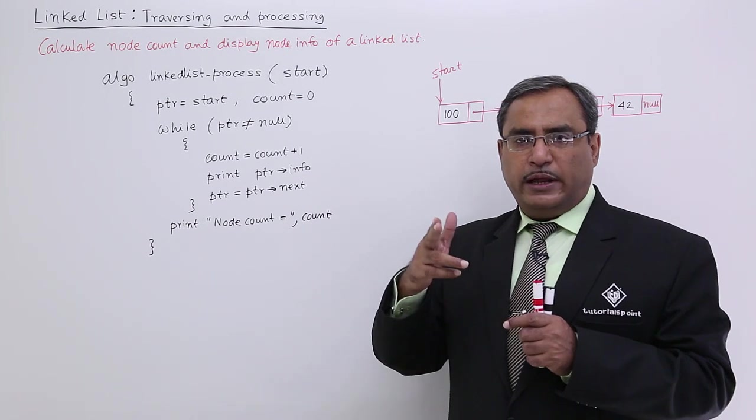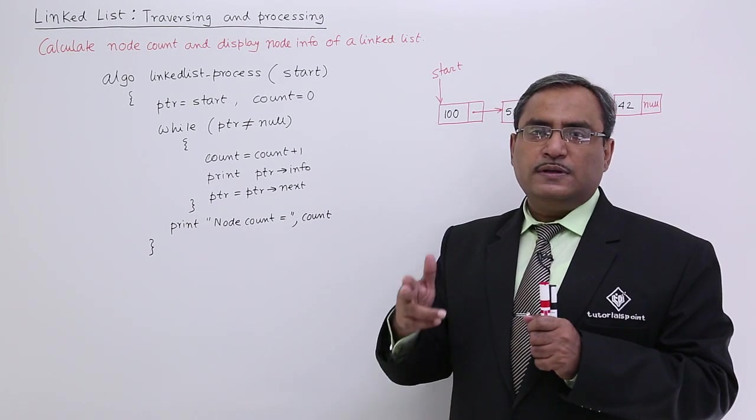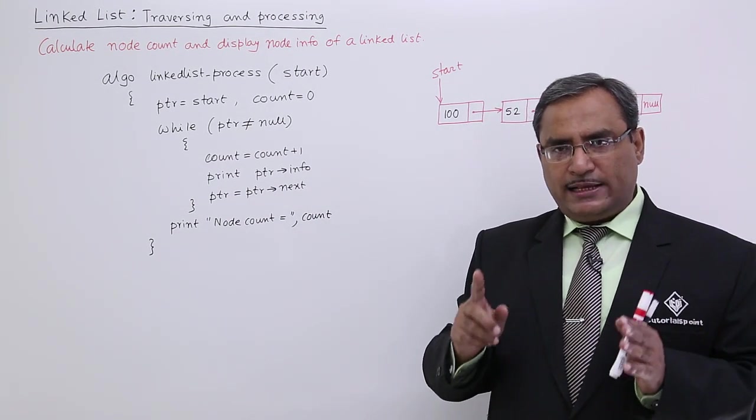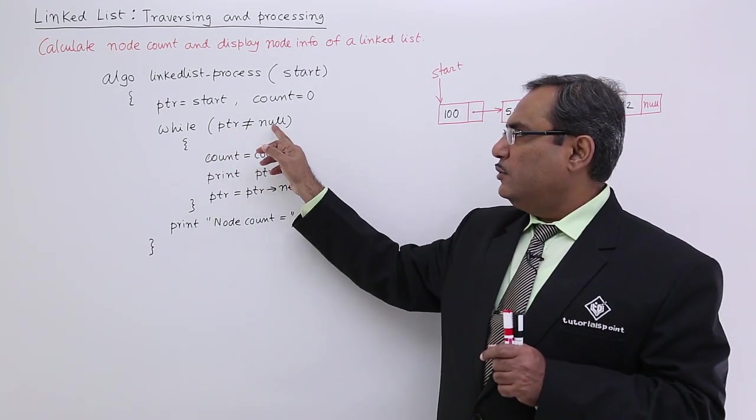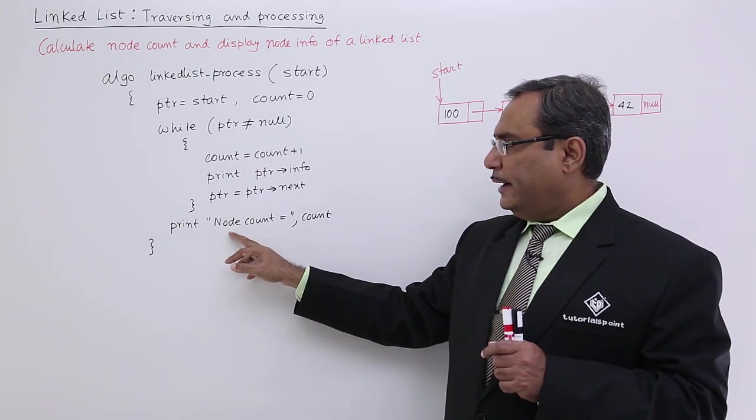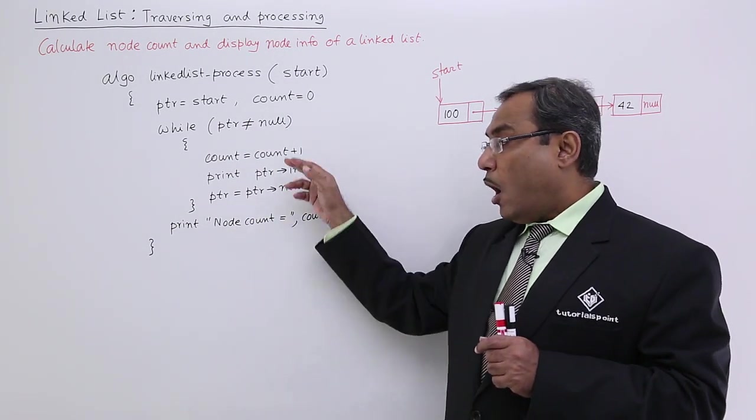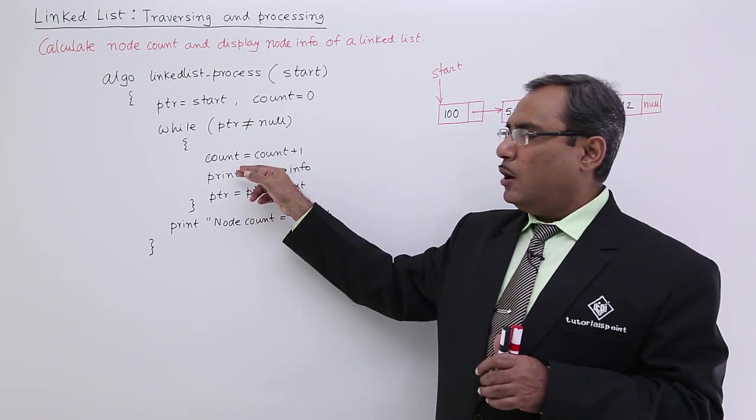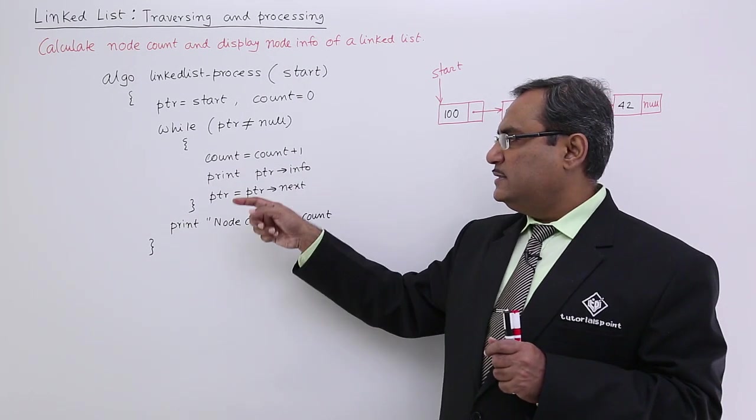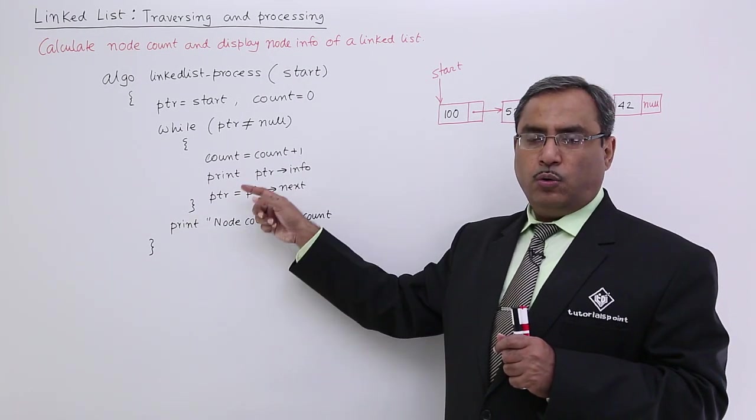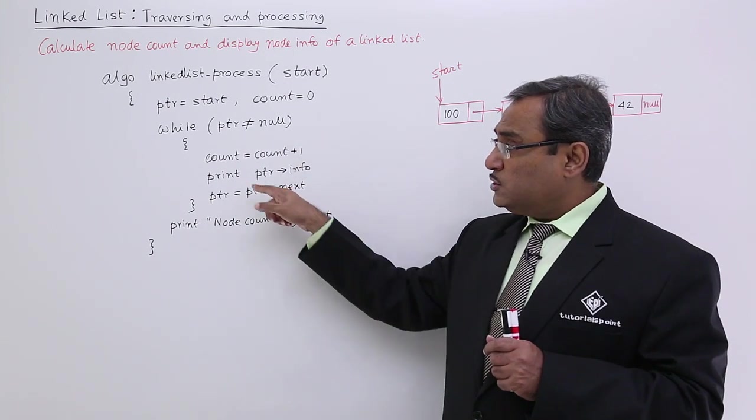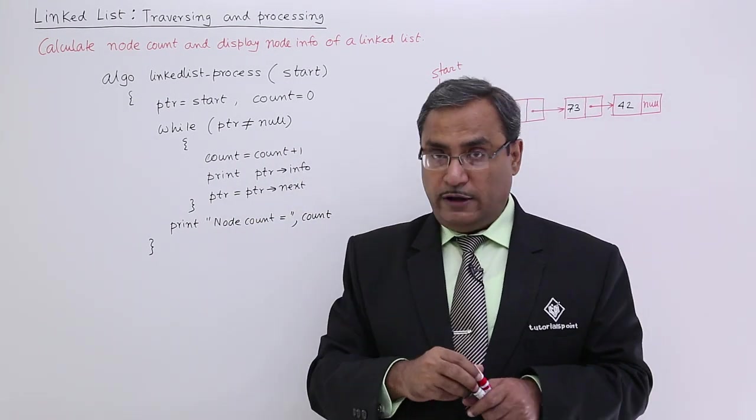The last node will have the next field value null. So when PTR becomes null, that will indicate the linked list has got exhausted. PTR is going to null for that particular condition, it will come out from this while and print the node count outside of the while body. Don't print node count inside the while body because it is getting counted. After exiting from the while construct, I am printing the count value, but within this while construct, you are supposed to print the node info.